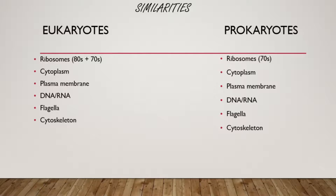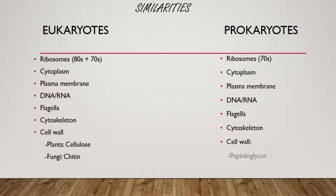Certain eukaryotic cells will also have a cell wall. Plants have one made from cellulose, and fungi have one made from chitin. Prokaryotes also have cell walls but made from peptidoglycan. Finally, both eukaryotes and prokaryotes need to make energy via glycolysis. For prokaryotes, glycolysis is the only way they make energy, but both share it. For now, just have a complete list of similarities and differences.